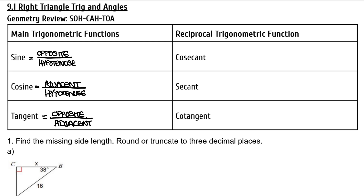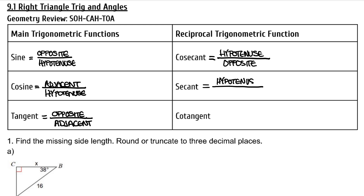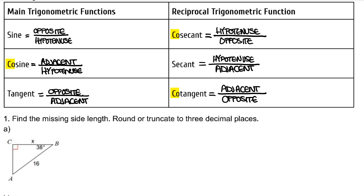Those are the three main trigonometric functions. But we also have reciprocal functions. Cosecant is the reciprocal of sine, so cosecant of an angle is equal to the ratio of the hypotenuse over the opposite side. Secant is the reciprocal of cosine, so hypotenuse over adjacent. And cotangent is the reciprocal function for tangent, so its ratio is the adjacent over the opposite. Notice how there is a 'co' in each reciprocal pair: sine and cosecant, cosine and secant, tangent and cotangent.